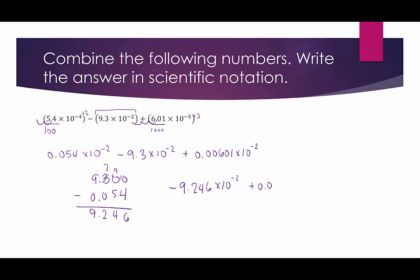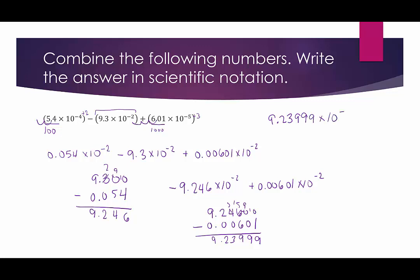Now we add negative 9.246 times 10 to the negative 2 plus 0.00601 times 10 to the negative 2. Adding two values with opposite signs means we really subtract: 9.246 minus 0.00601. After regrouping: 10 minus 1 is 9, 9 minus 0 is 9, 15 minus 6 is 9, and then 3 and 2. We get 9.23999, and since this stays negative with the unit 10 to the negative 2, our final answer is negative 9.23999 times 10 to the negative 2.